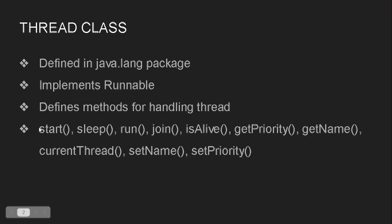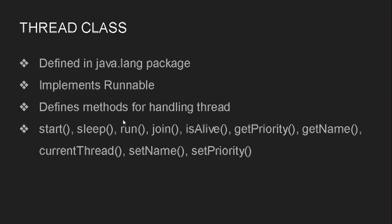The sleep() method is used to briefly interrupt the execution of a particular thread. For example, if you want to interrupt the execution of a thread for one or two seconds, we call this method and it will temporarily stop the execution of that thread. The run() method is the entry point of the particular thread — just like the main method is the execution point for a Java program, run() is the starting point for the thread.